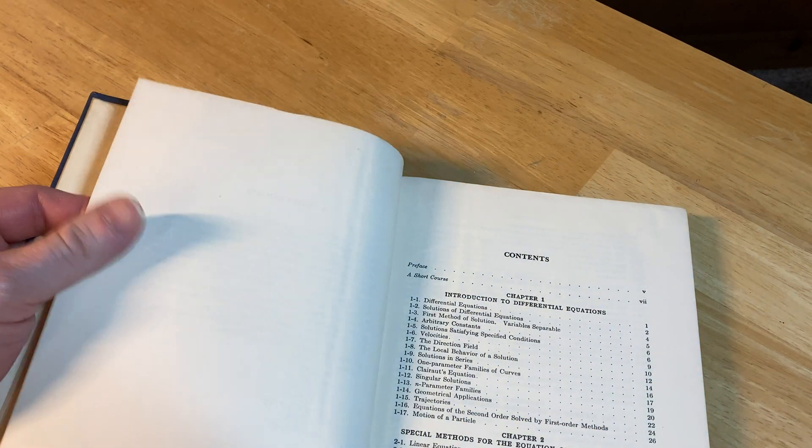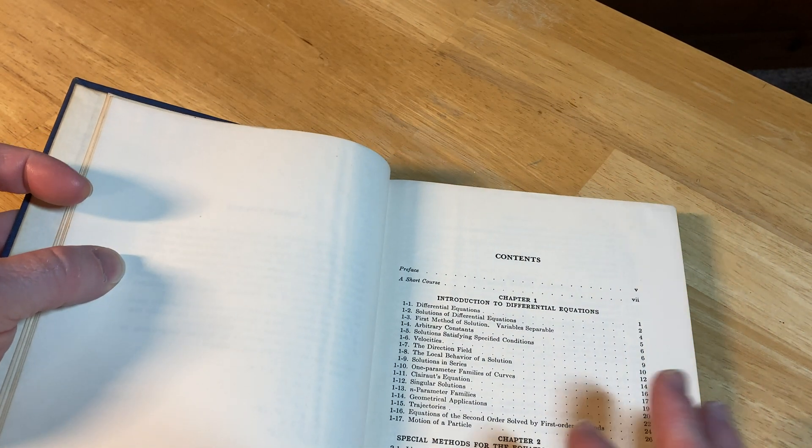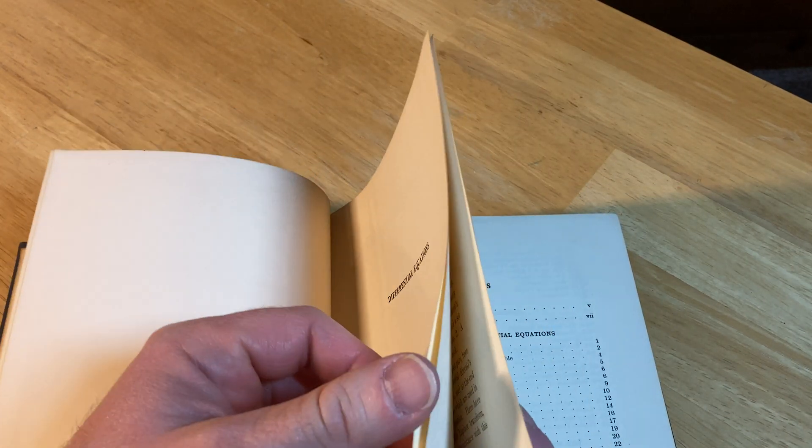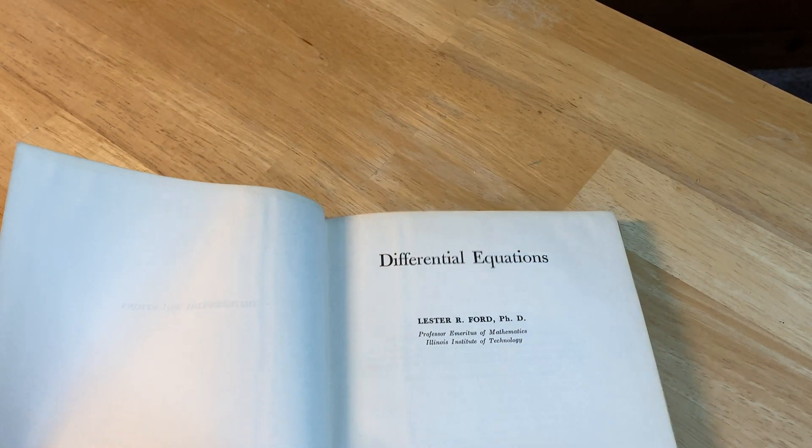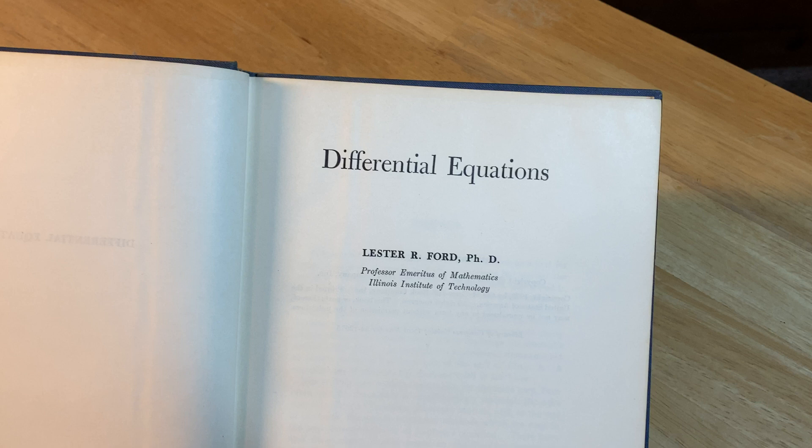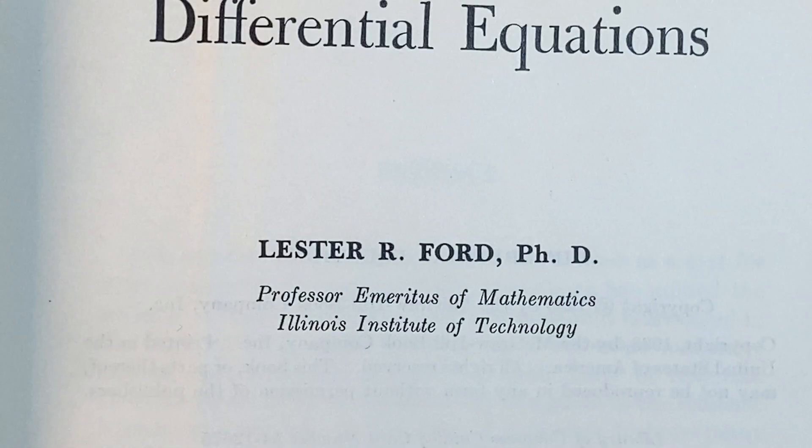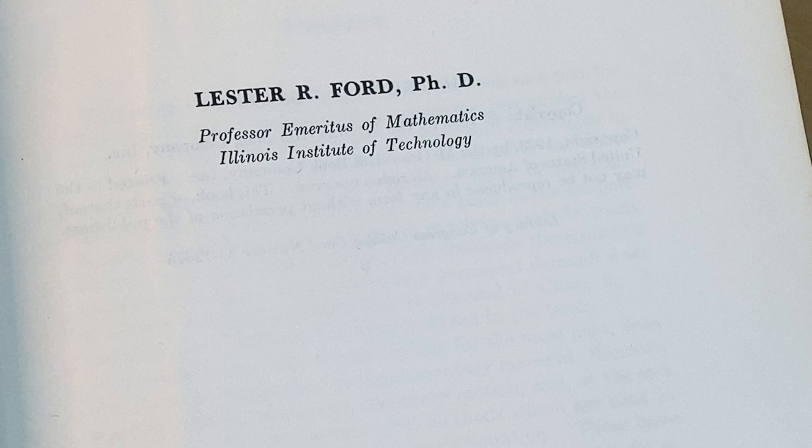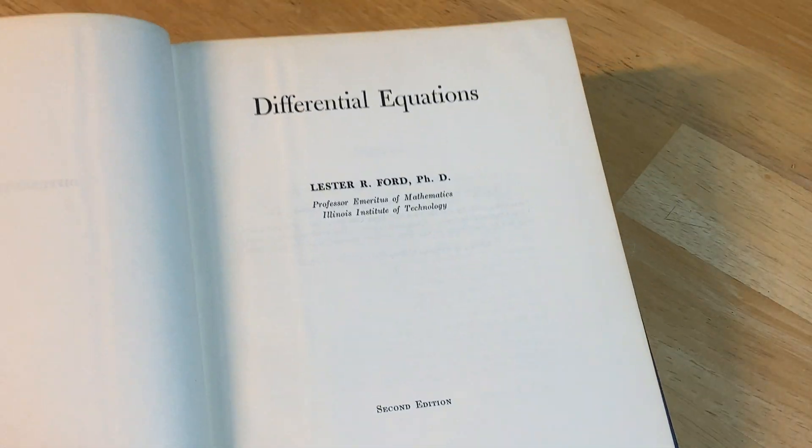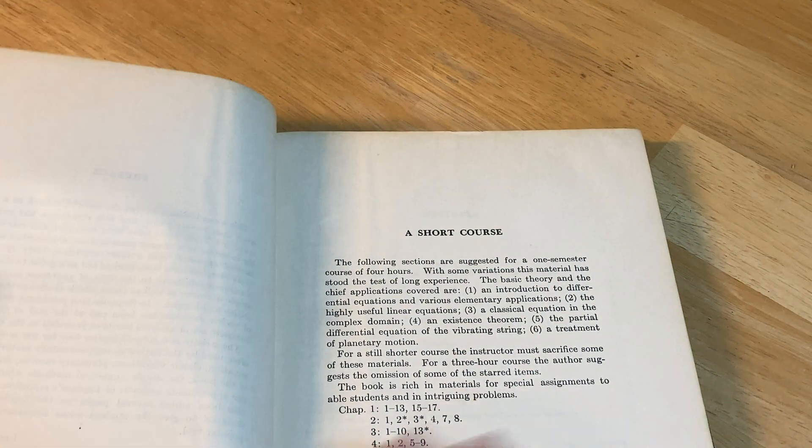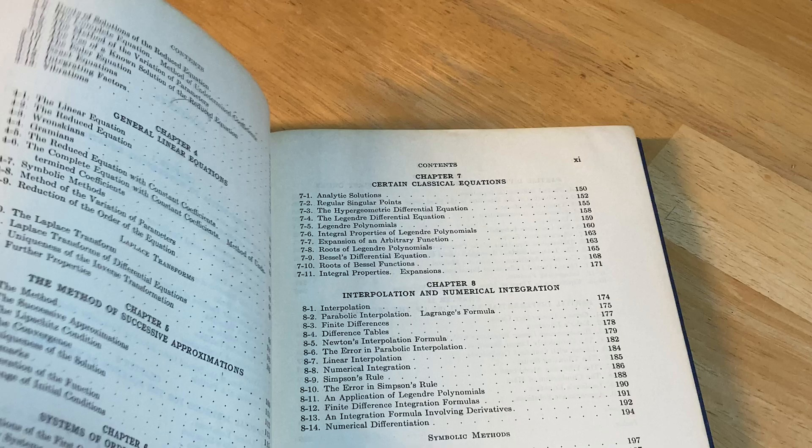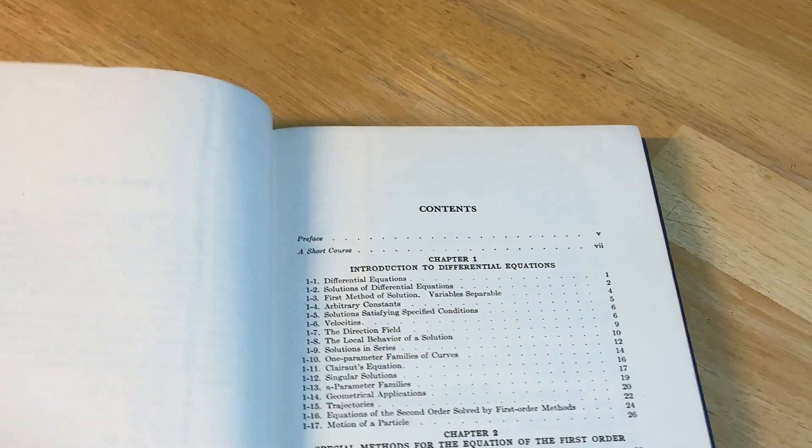Let's take a look at the topics. By the way, the author of this book, his name is Lester R. Ford. Let's make sure we get a good look at this guy. PhD, Professor Emeritus of Mathematics, Illinois Institute of Technology. This is the second edition. The first edition was from 33, so it took him a while to change the edition.